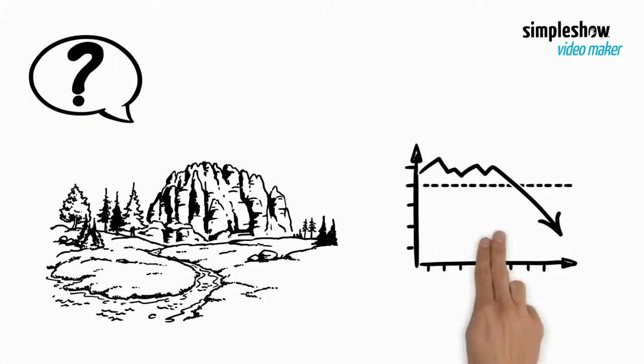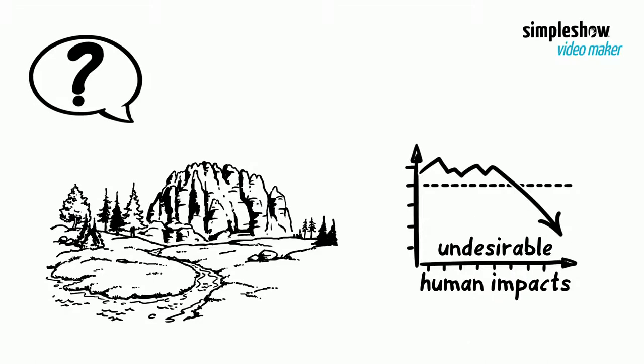So, what exactly is to be done? Nature can still be saved. Reducing undesirable human impacts may include the following.